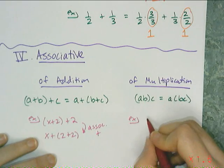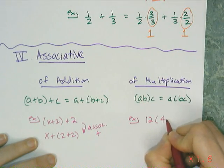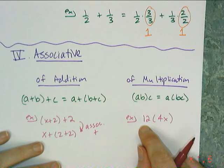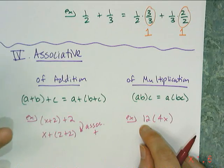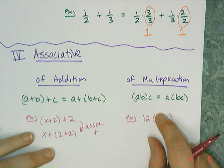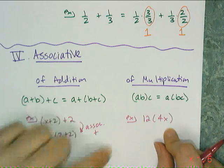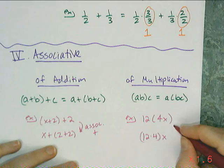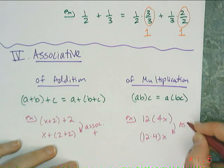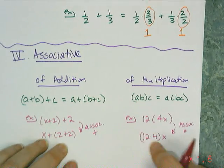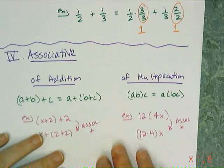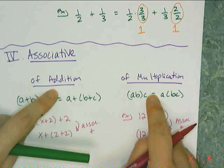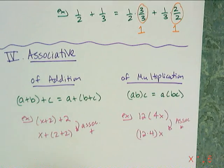The same applies to multiplication. If I have 12 times the quantity (4x), that's not simplified — I have parentheses and I can multiply 12 times 4. I need to associate first, grouping the 12 and the 4 together, then multiply by x. That is the associative property of multiplication. It allows me to rearrange where the parentheses are, but only when it's addition or multiplication — no subtraction or division.